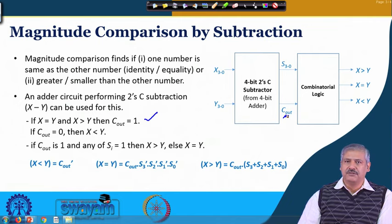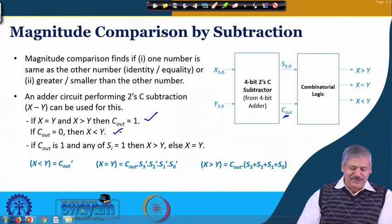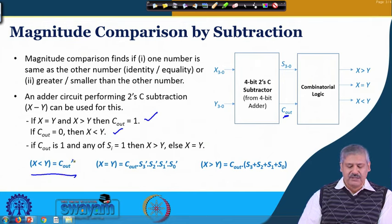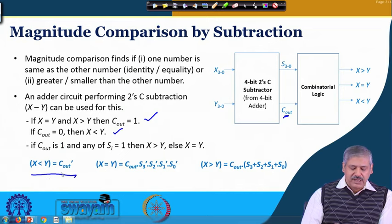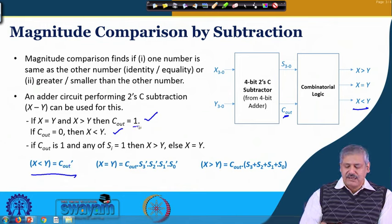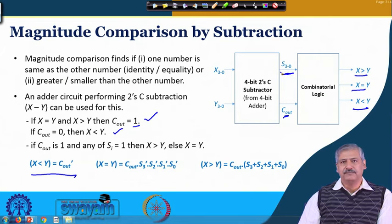If the carry out generated is 0, then the result is negative, meaning x is less than y. So the logic for x less than y is clear: if no carry is generated, the result is x less than y. We can get the corresponding output x less than y directly from the complement of the carry out. When carry is generated, there are two possibilities: either x is equal to y or x is greater than y.